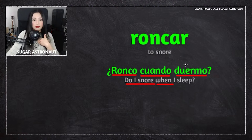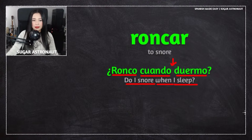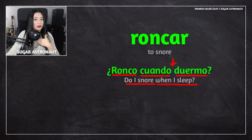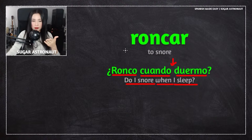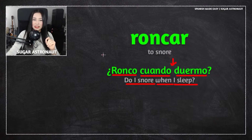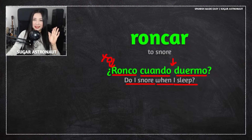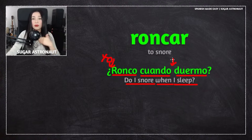Yo duermo — we don't need 'yo.' But essentially you're saying 'I sleep.' Yo duermo. Dormir means to sleep. Yo duermo means I sleep. That's why we have 'duermo.' It's very interesting, because essentially you're having an imaginary yo right here — yo ronco cuando yo duermo.